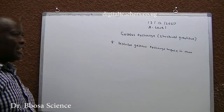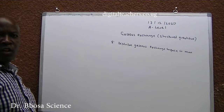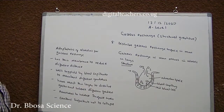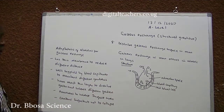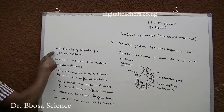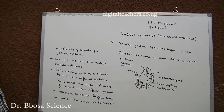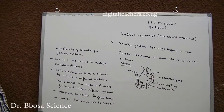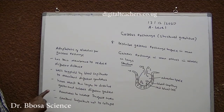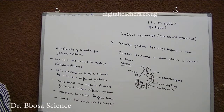Number 8: Describe gaseous exchange surface in man. You can pause and answer. Gaseous exchange in man occurs in the alveoli in the lungs. The structure of the alveolus consists of an air sac surrounded by blood capillaries. Adaptations of the alveolus for gaseous exchange: 1. Has a thin membrane to reduce diffusion distance. 2. Well supplied by blood to maintain diffusion gradient. 3. Have a moist thin layer to dissolve gases and increase diffusion gradient. 4. Are numerous to increase surface area. 5. Contain surfactant to prevent collapse.